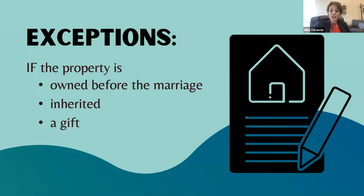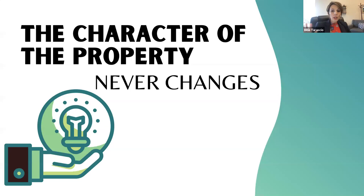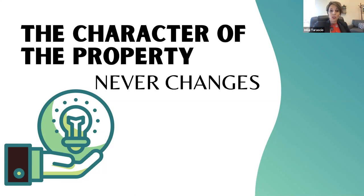There are different ways the community can claim a lien on something that doesn't belong to it. But if it's gifted out of the community, inherited, or owned prior to the marriage, it is not community property. The character of the property never changes. If I have a house before I'm married, get married, we live in it together for 20 years, and the community pays all the bills — does the house become community? It does not. It stays a separate asset because the character doesn't change.